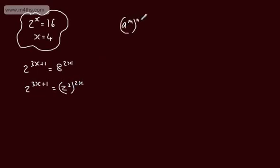a to the power of m raised to the power of n was equal to a to the power of m multiplied by n. So we end up at this stage with 2 to the power of 3x plus 1 is equal to 2 to the power of 6x. If the bases were the same,